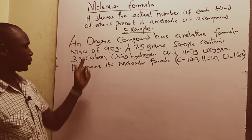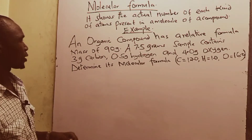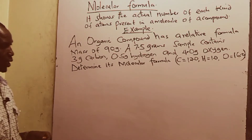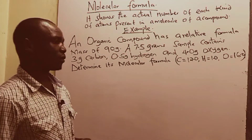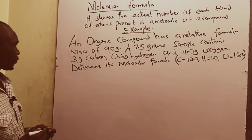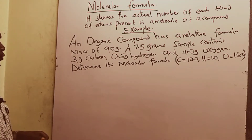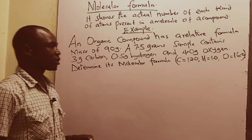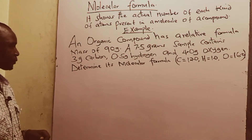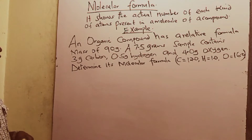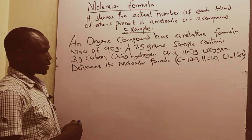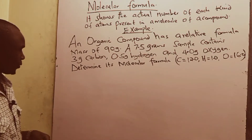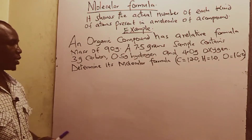So before we calculate the molecular formula of a compound, we must first start by looking at the empirical formula. To calculate the empirical formula we are going to form a table. From the question, an organic compound has a relative formula mass of 90 grams. A 7.5 gram sample contains 3 grams carbon, 0.5 grams hydrogen, and 4.0 grams oxygen, meaning that compound is made up of carbon, hydrogen, and oxygen.